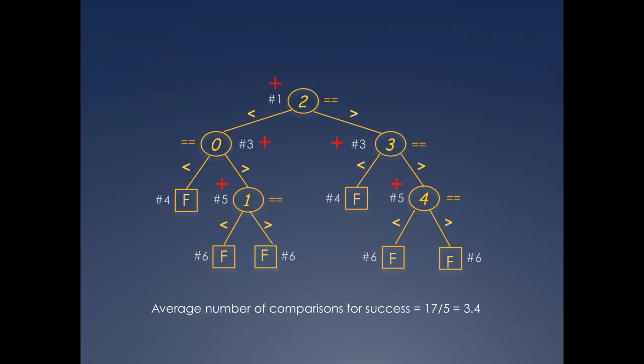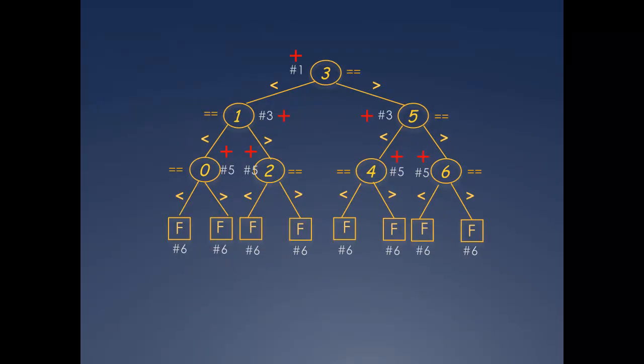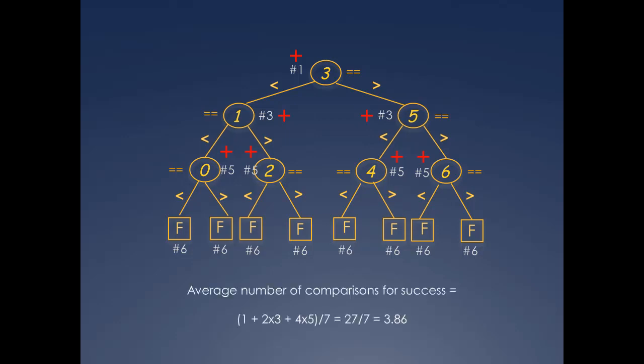Let's repeat this for the array of length 7. The sum of comparisons over all success positions is 1 plus 2 times 3 plus 4 times 5, which is 27. The average, then, is 27 divided by the 7 success positions, which works out to 3.86.